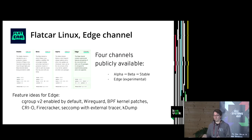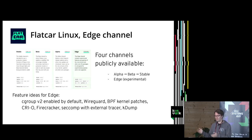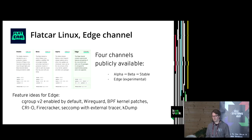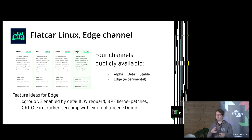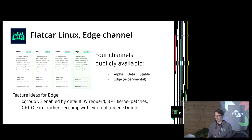We have the traditional alpha, beta, stable — when something is new it goes to alpha first, then beta, then stable. Recently we added a new channel called Edge, which is for experimental things — there is no guarantee at all — but we can experiment with adding new BPF features, cgroup features, or anything we like to experiment on.